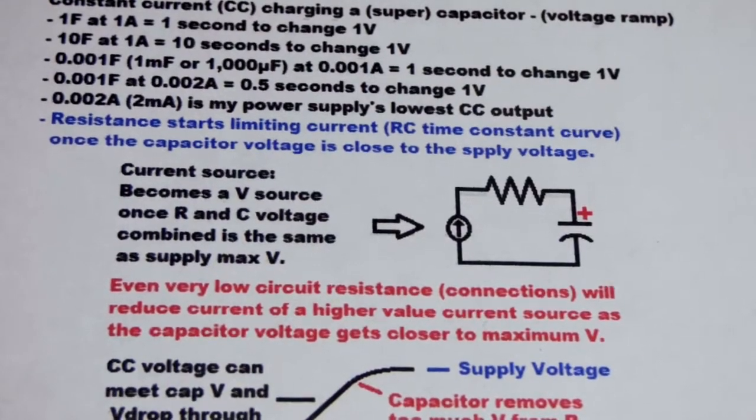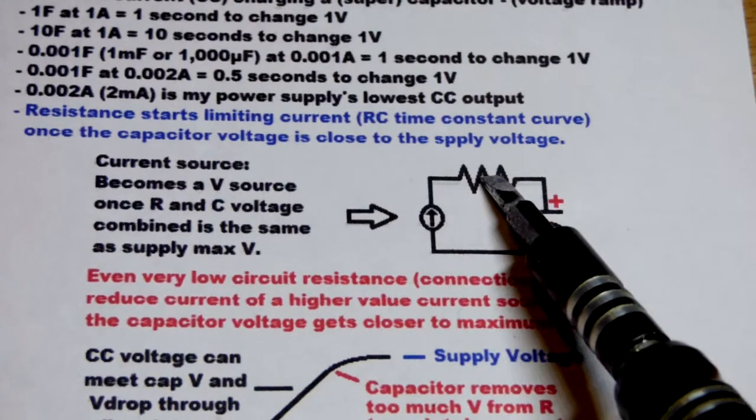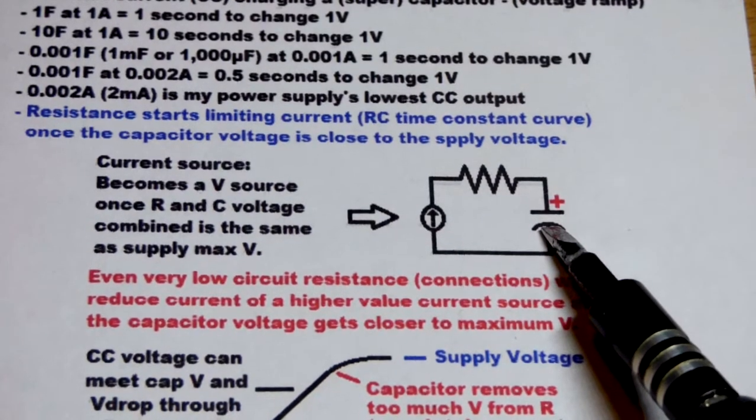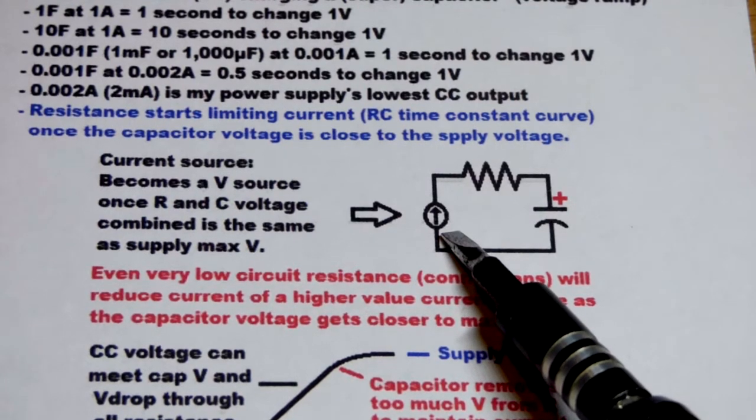Now here's the diagram. It's mostly writing because the circuit itself was pretty straightforward. We had a current source, a resistor, and a capacitor. We were looking at, in an earlier video, supercapacitors.